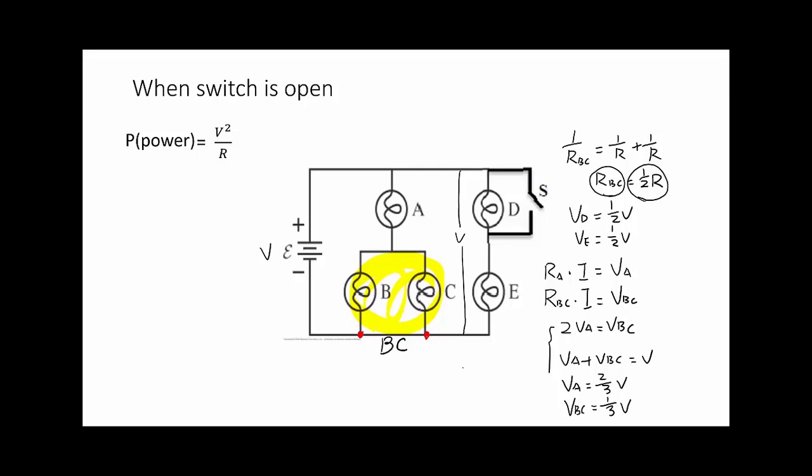As we discussed before, BC are in parallel. So the voltage across B and C are the same, 1 third V. Now we can rank them. Highest is VA. Then VD equals VE larger than VB equals VC. So when the switch is open, A is brighter than D equals E brighter than B equals C.